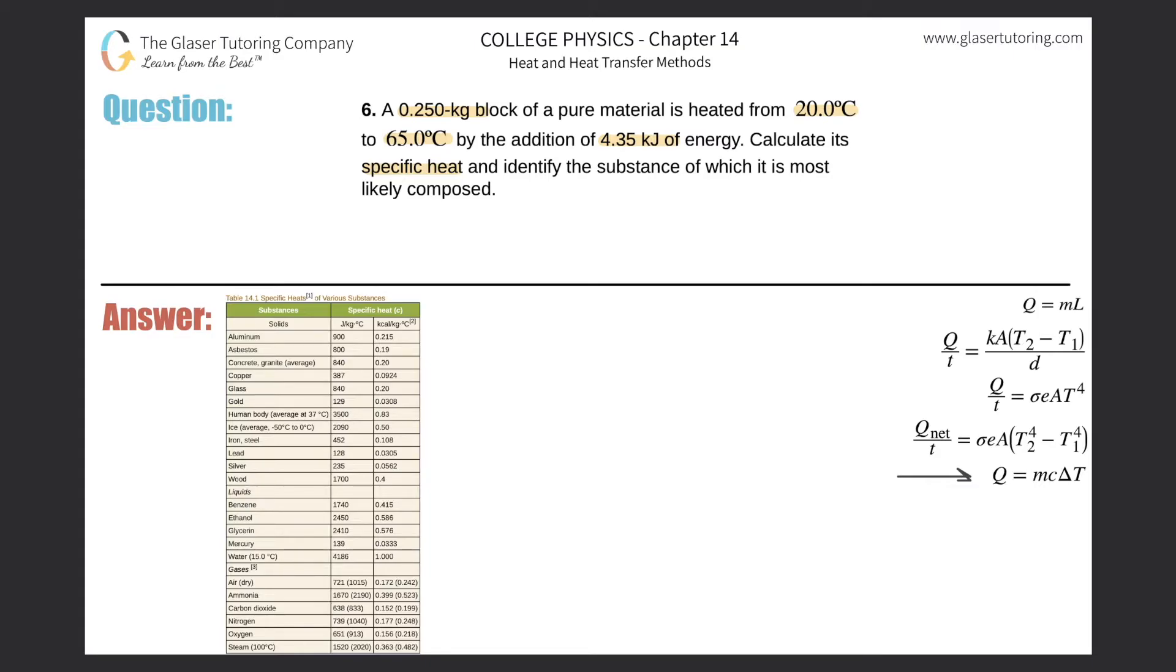Here we have the formula that says the heat gained or lost by a particular object will be equal to the mass of that object multiplied by the specific heat of that object multiplied by the change in temperature. The one variable out of these four that can identify a material is the specific heat.